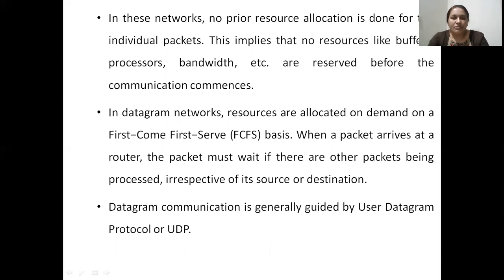One more feature of datagram networks is that no prior resource allocation is made for any individual packets. Resources here refer to buffers, processors, and network bandwidth — these are never reserved before communication starts. In datagram networks, resources are allocated on a first-come-first-serve basis. When a packet arrives at the router, it must wait if any other packets are currently being processed, irrespective of its source or destination — there are no special provisions or priorities. Depending on the order in which it arrives, it waits until its turn comes on the router and then gets processed.